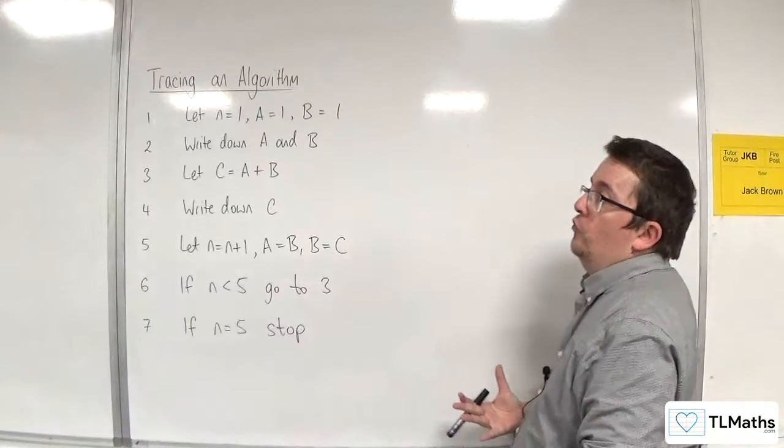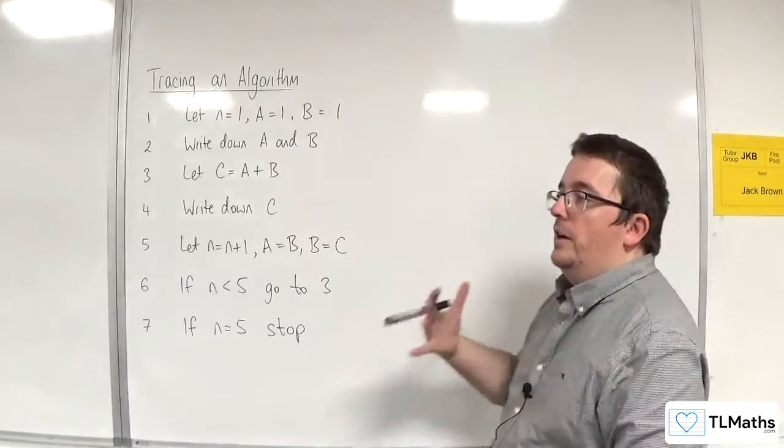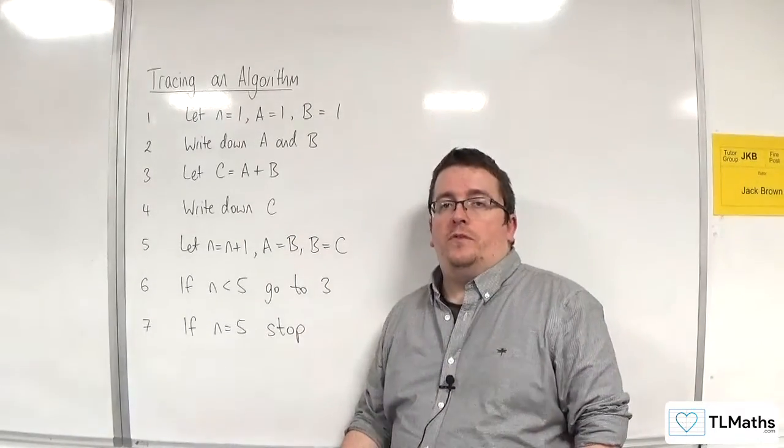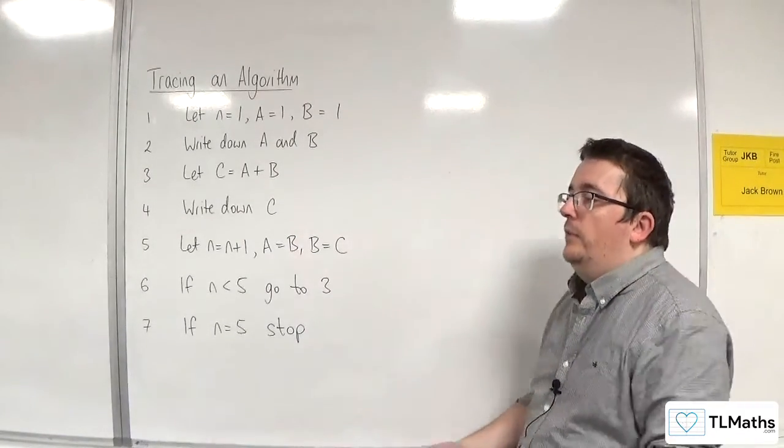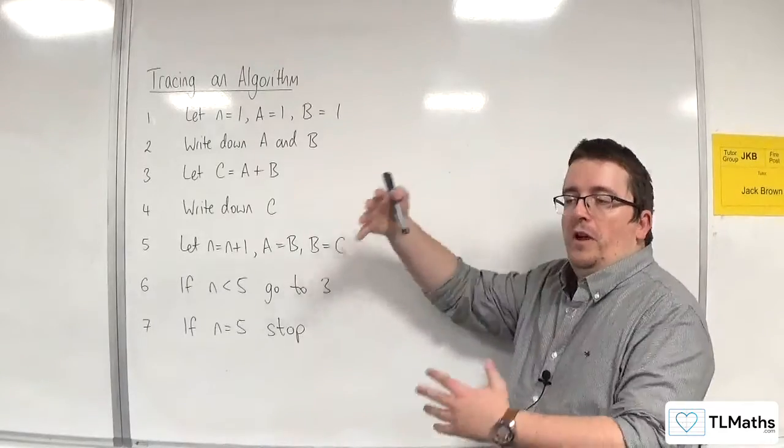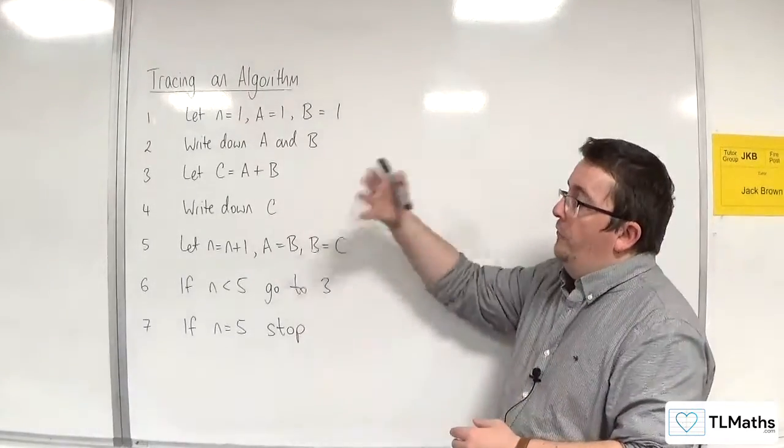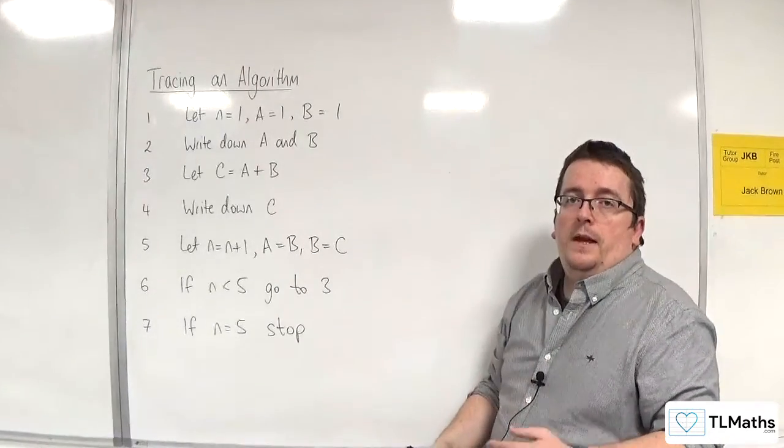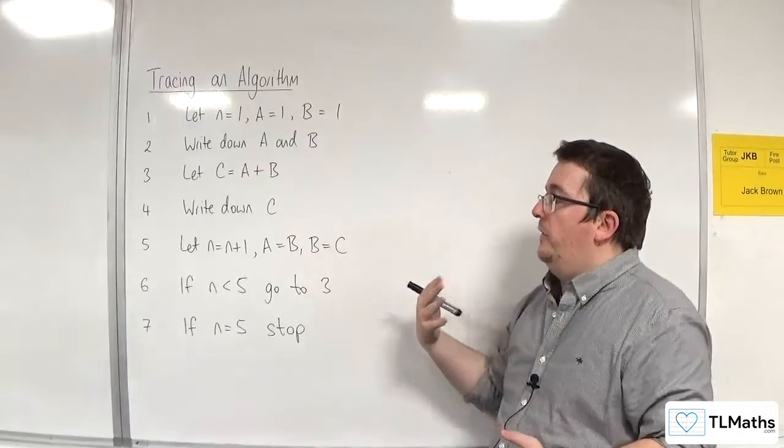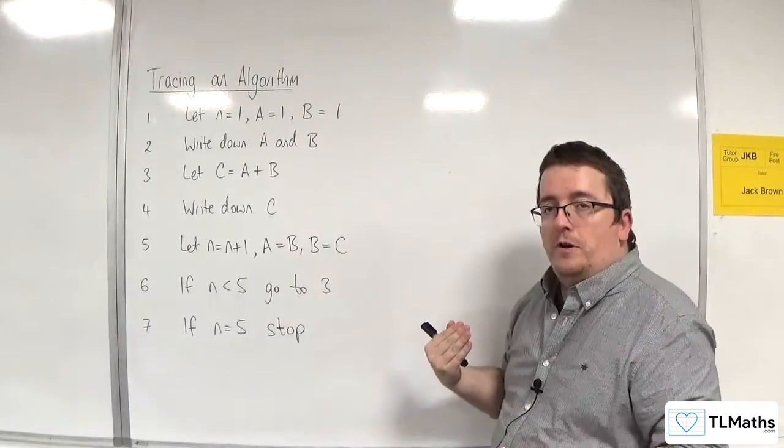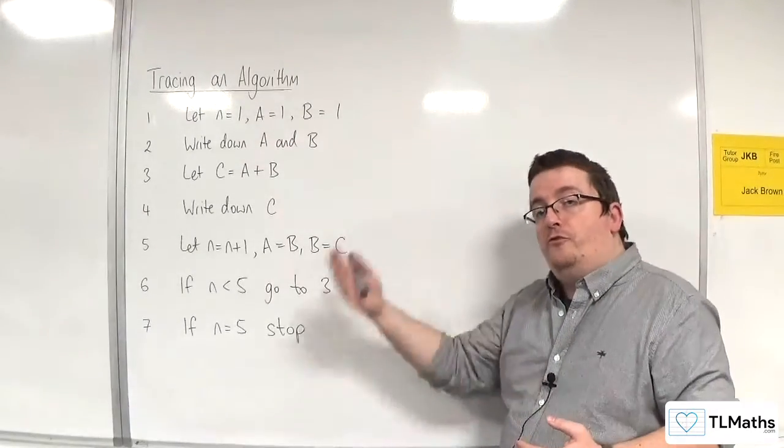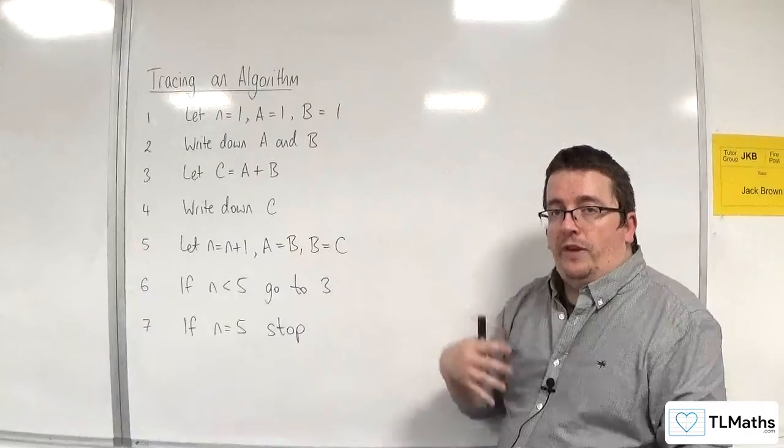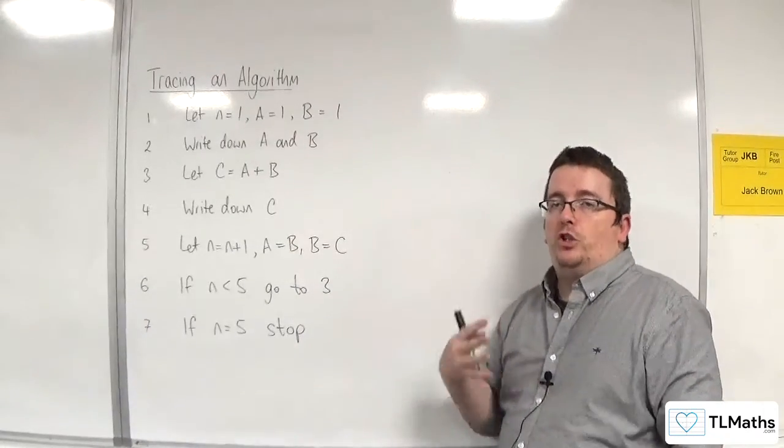So, here is our first algorithm, and we are going to trace through the algorithm. Now, what that means is that we are going to build up a table that we're going to fill in as we go, and in some cases it's going to output some values for us, and through that, hopefully we'll be able to see what the algorithm is actually doing.